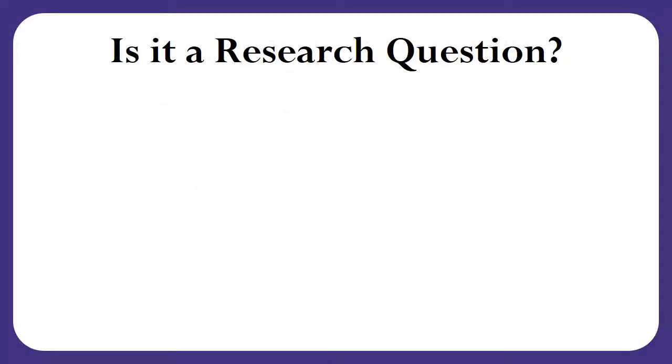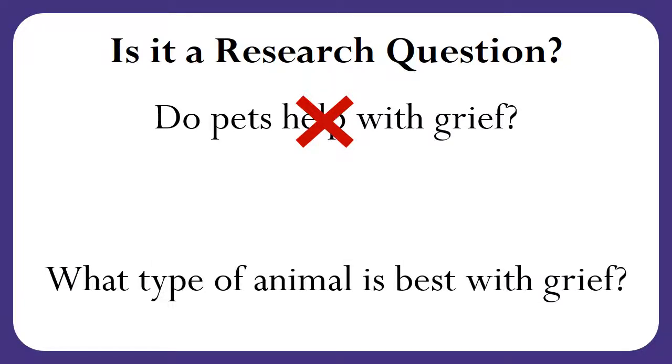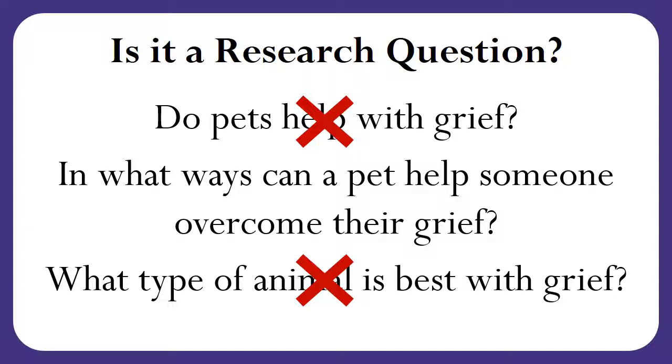These are all great questions, but they aren't all going to be useful to guide a paper. Do pets help with grief is a yes-no question, and the student needs to write a paper. What type of animal helps best with grief could be a good paper, but it doesn't meet the requirements of the paper to talk about the impact that pets have. In what ways can a pet help someone overcome their grief is a much better question. It talks about the impact of pets, it's open-ended, so there's plenty to write about.